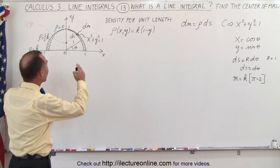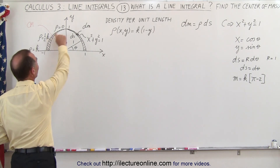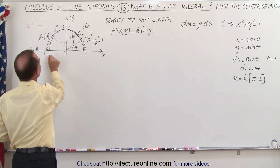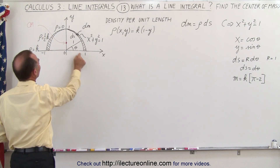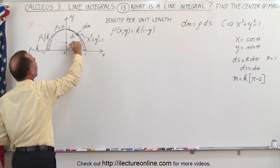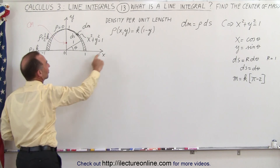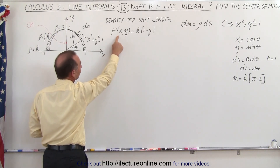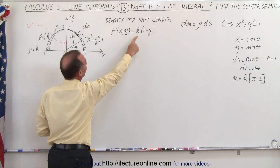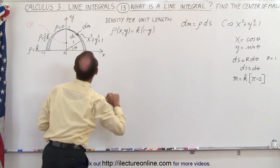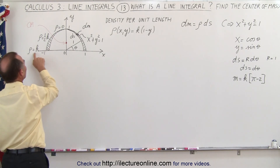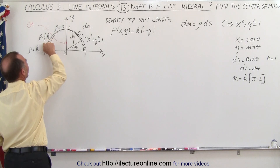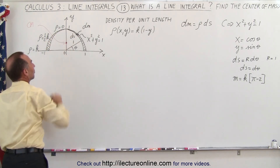In the previous example, we used the very same wire. We have a semicircular wire with variable density, shaped into a semicircle of radius 1. It's more dense at the x-axis, and it becomes less dense as you go farther away from the x-axis. The density per unit length, or linear density, is equal to k times (1 minus y), which means that at the x-axis the density is k. As you go farther away, at the halfway point from 0 to 1, it's half k, and all the way at the top the density goes to 0.